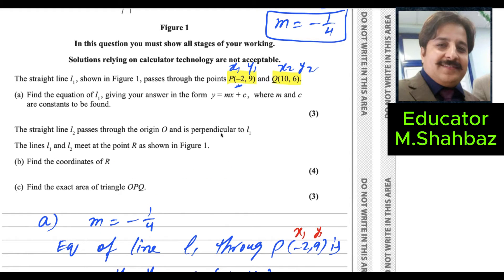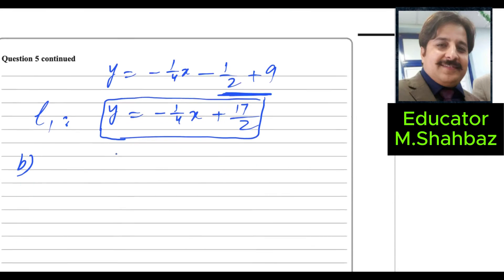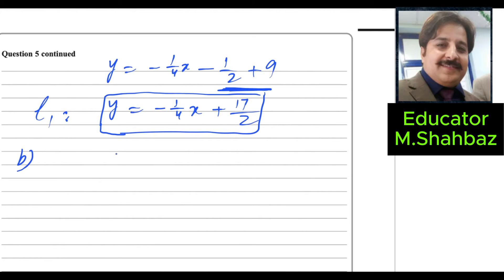Line L2 passes through the origin and is perpendicular to L1; they meet at point R. Since L1 is perpendicular to L2, the product of their gradients equals minus 1. This means if one slope is m1, the gradient of the other line is minus 1 over m1.